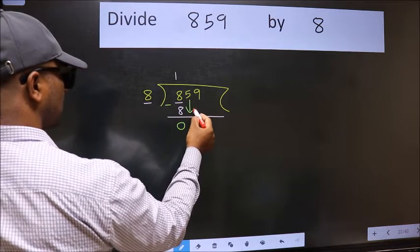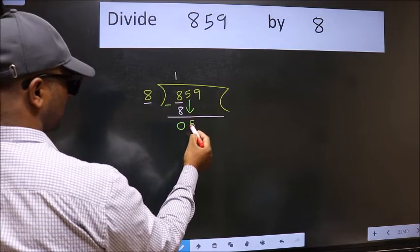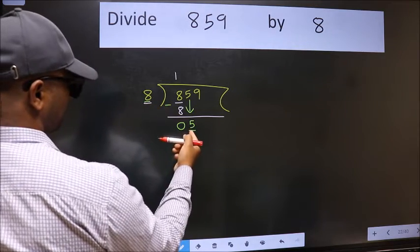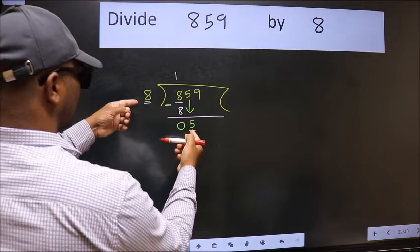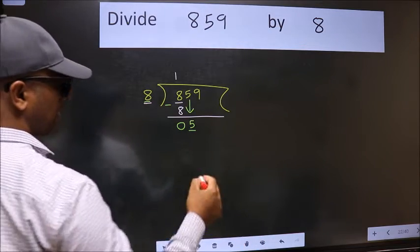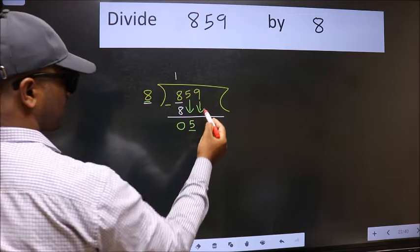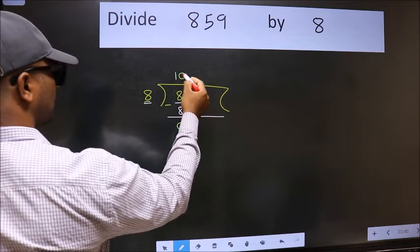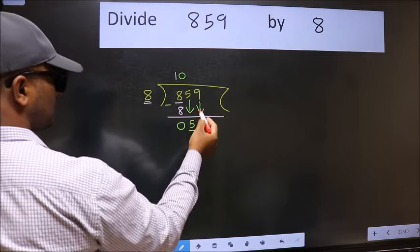After this, bring down the next number, so 5 comes down. Now we have 5 here and 8 here. 5 is smaller than 8, so we should bring down the second number. The rule is we must put 0 here, then only we can bring this number down.